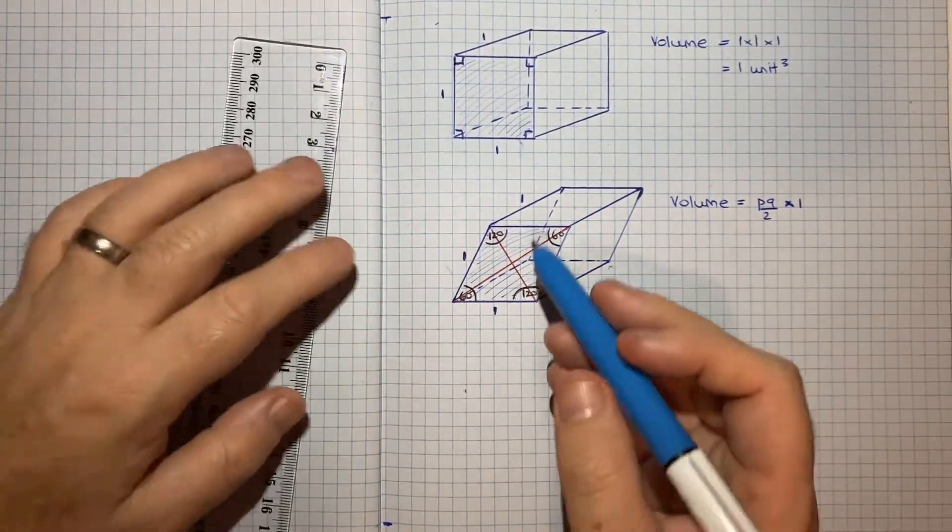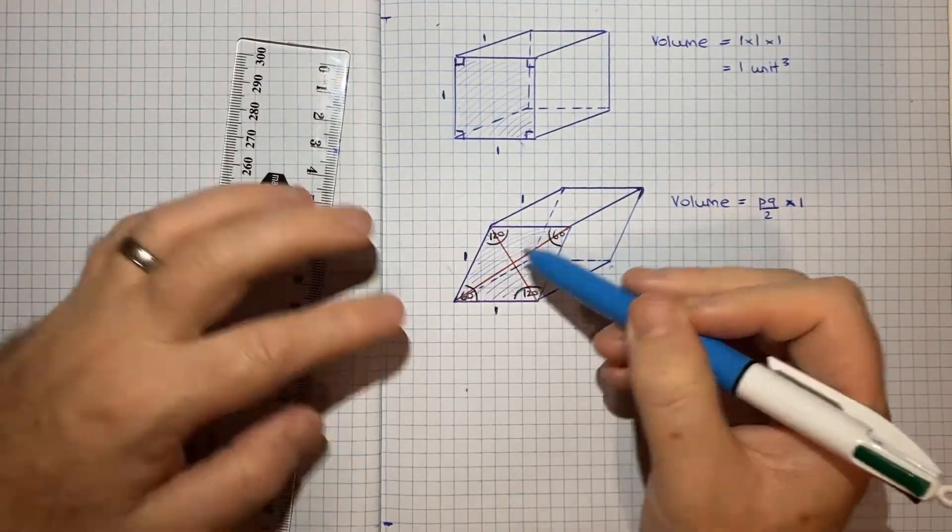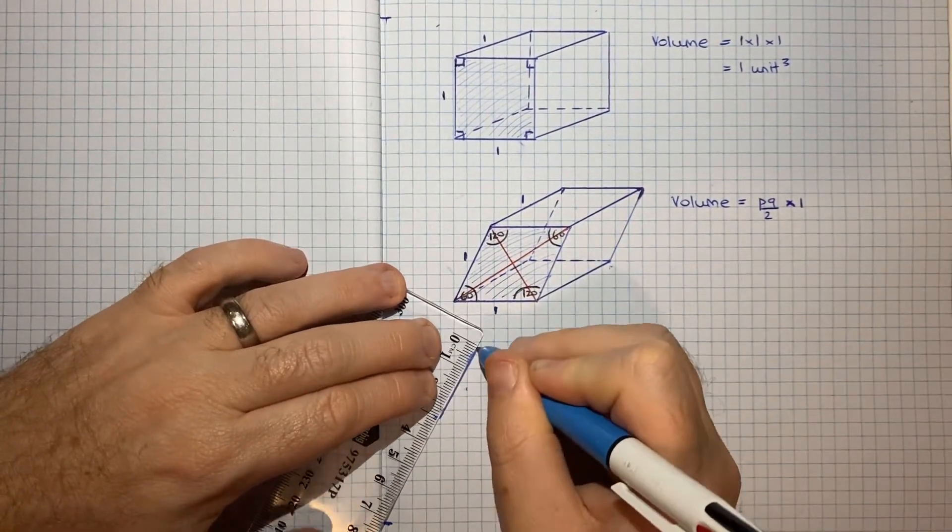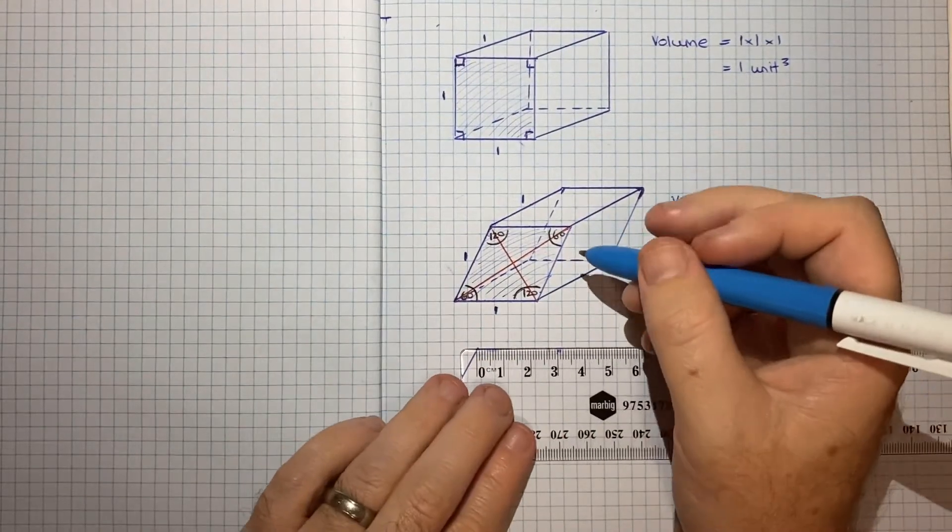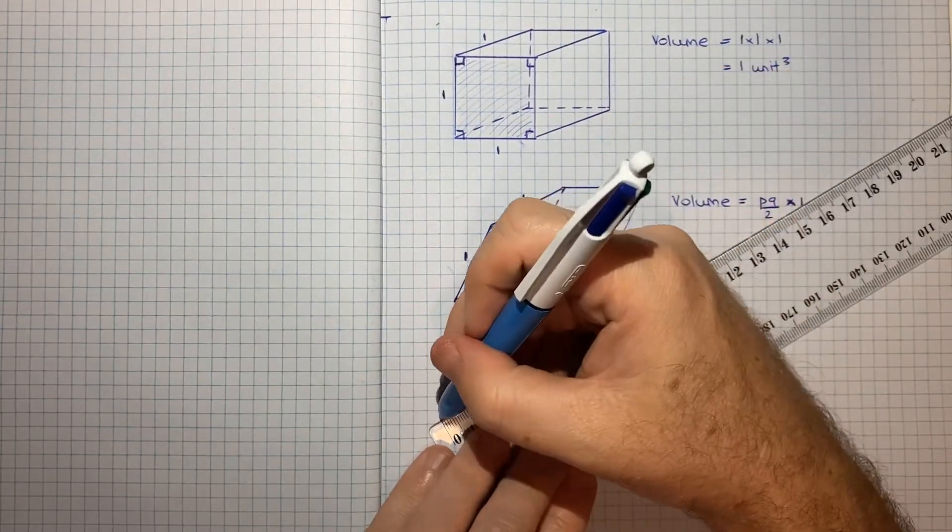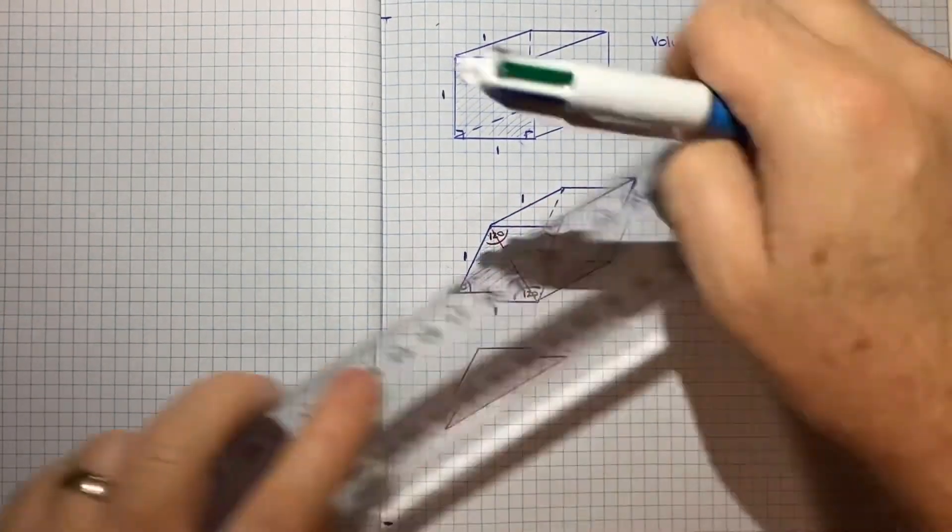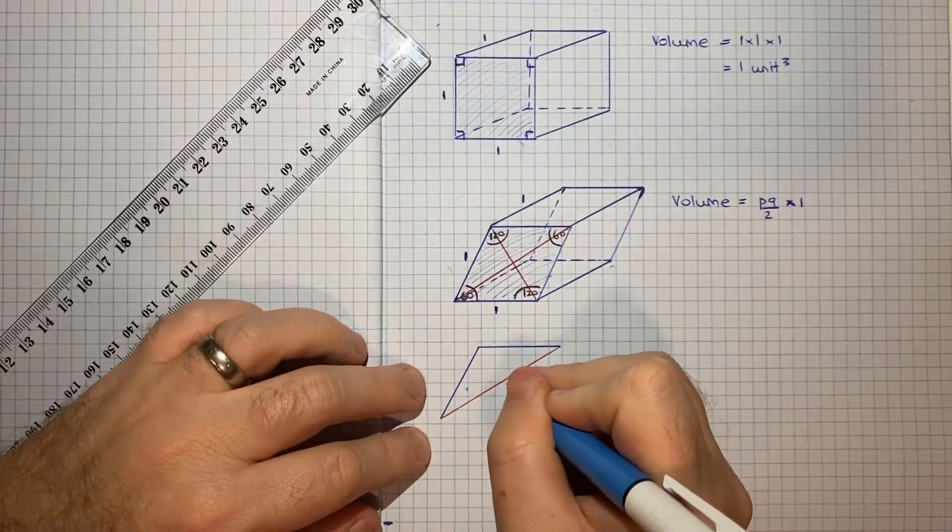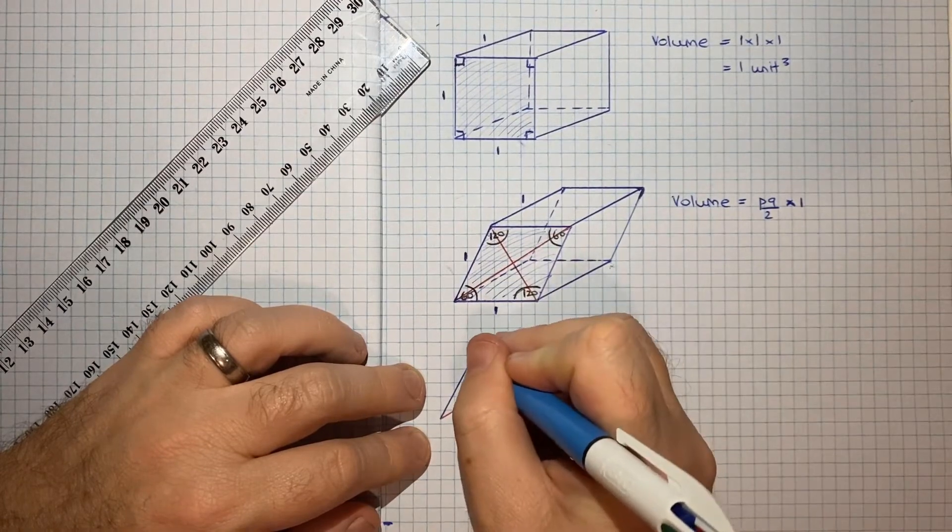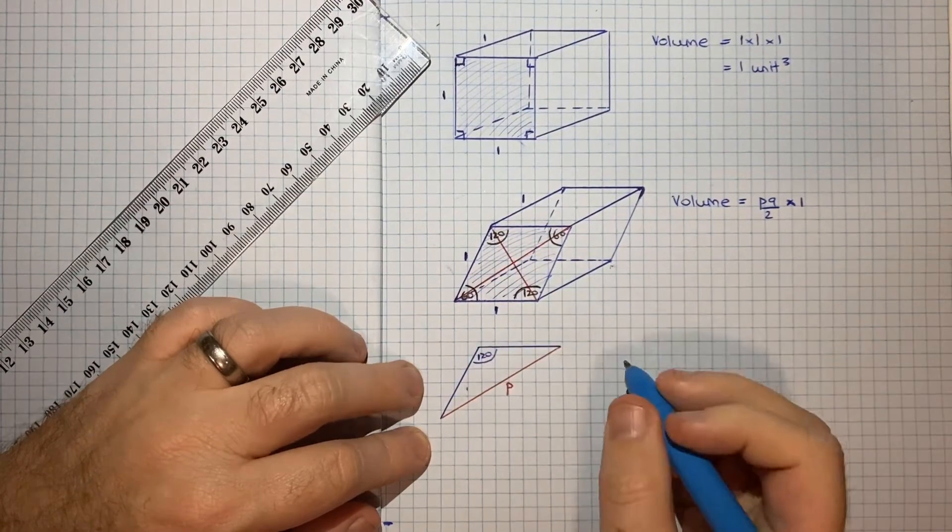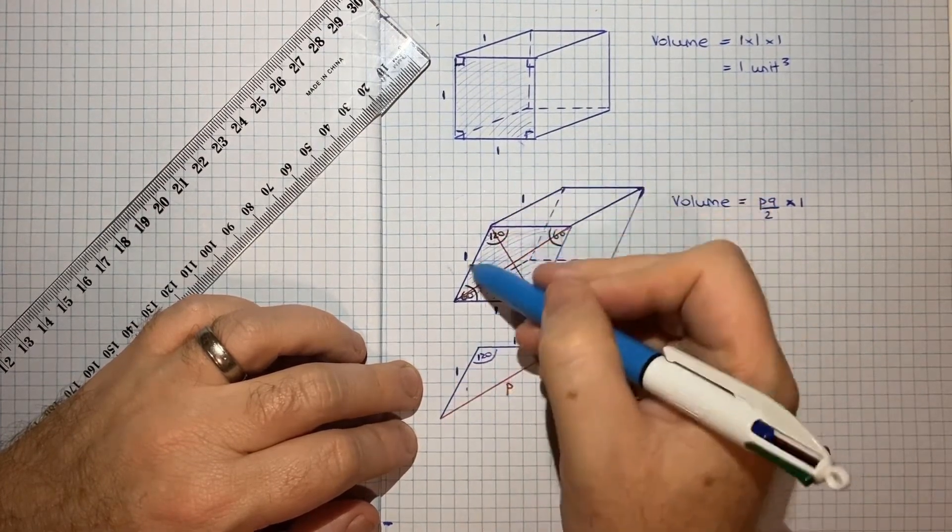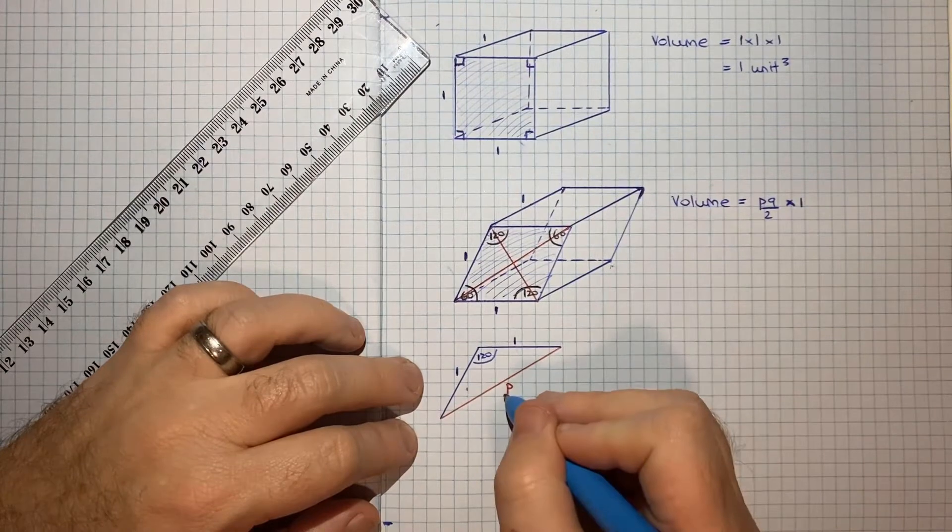So it might help just to, if I break this into two triangles, so we'll have our first triangle being this one, then we've got our kind of red side here. If I call this long diagonal P, so we know that this angle here is 120. We know the length of these sides are one and one, because all the edges have the same length of one.